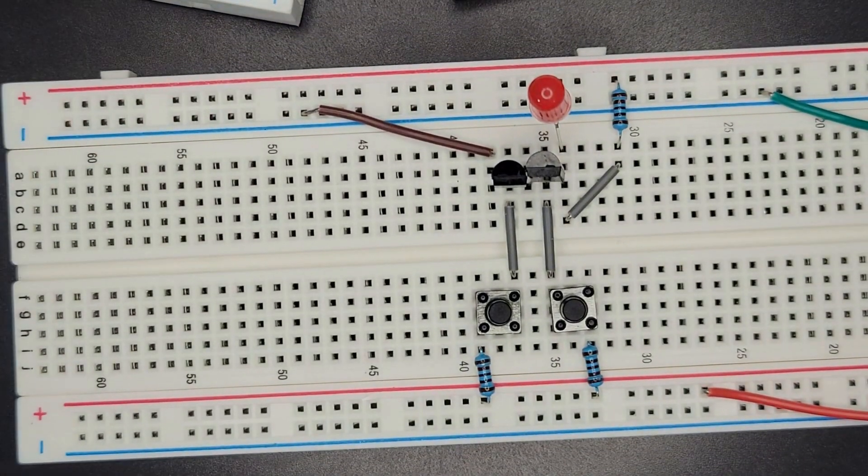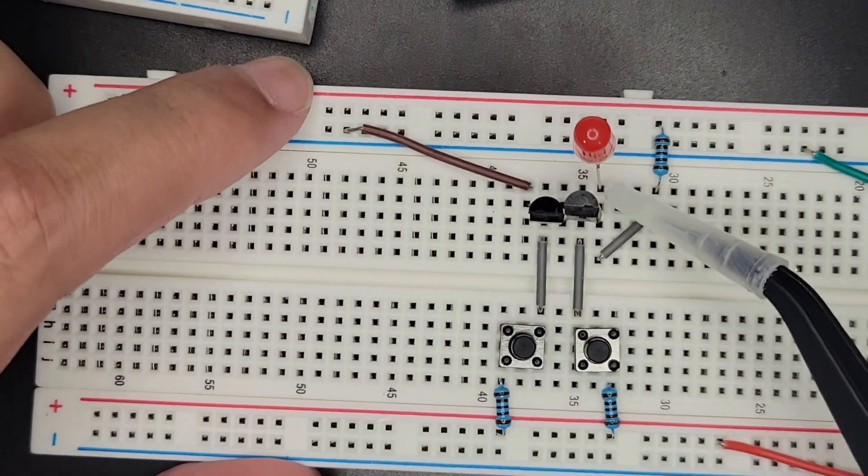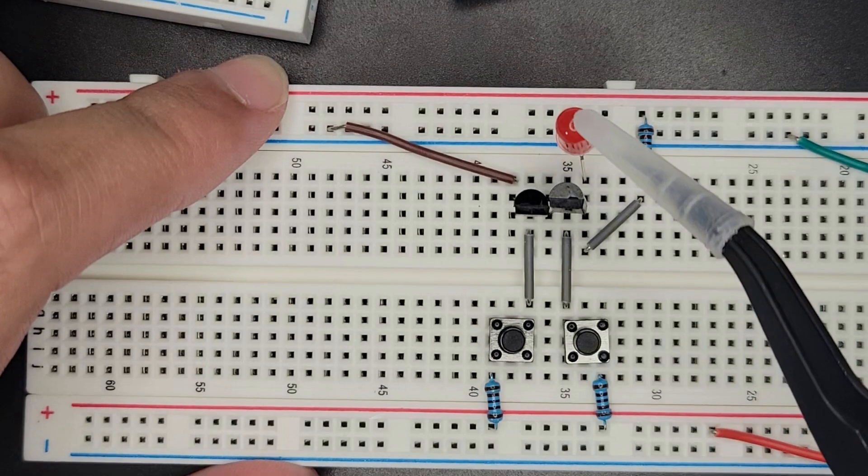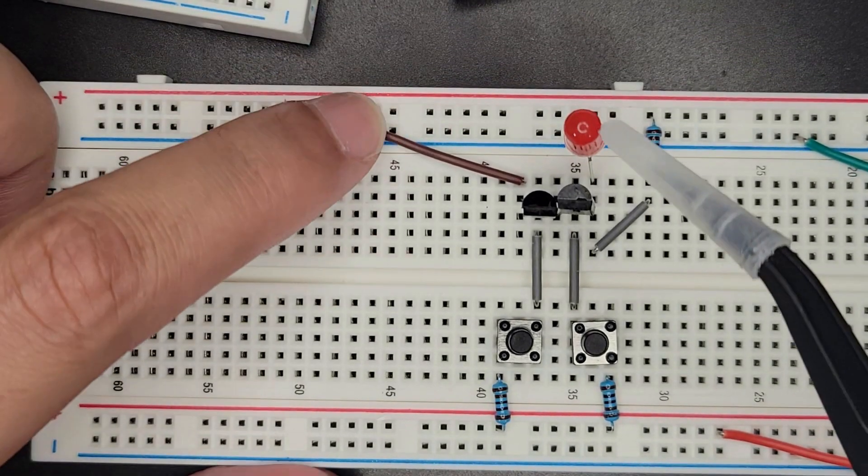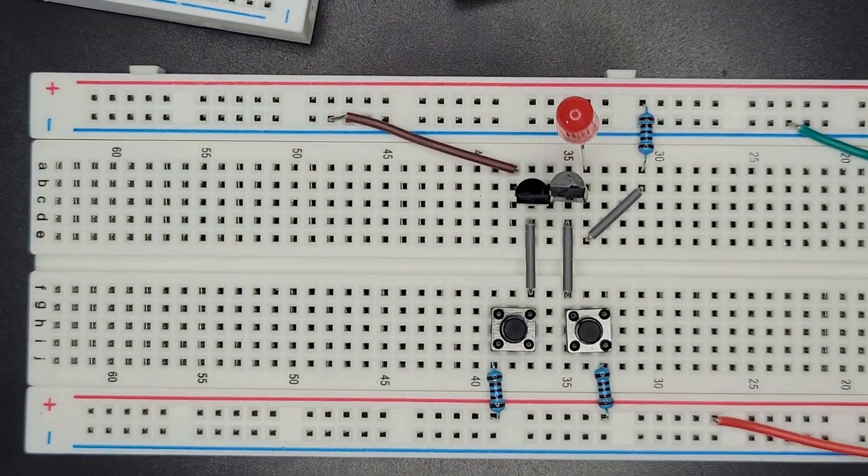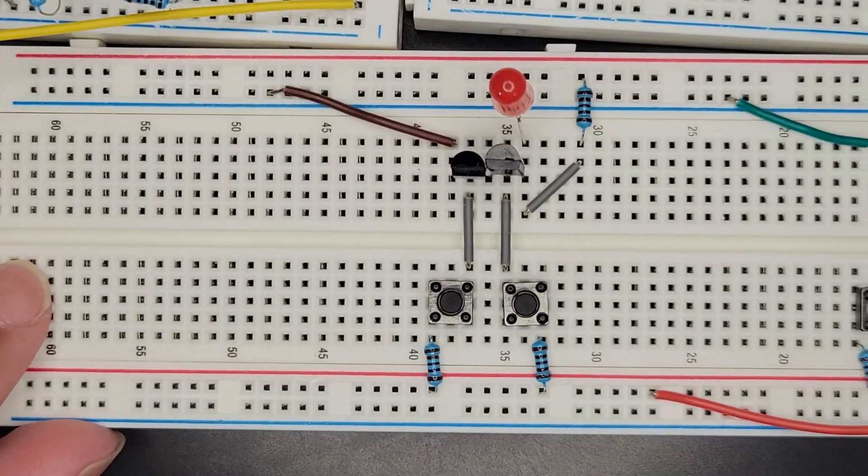I think this works. Power comes in, wants to go home, forced to go through the LED by default, which means it's on by default. And only when you press both of these does it turn off, which is the opposite of AND, right? So let's try it.